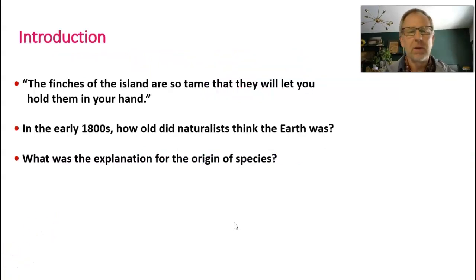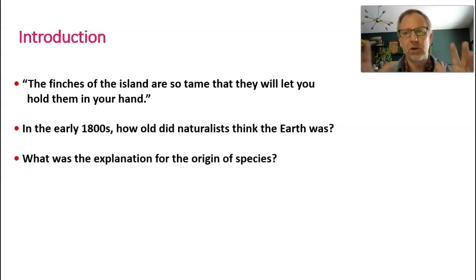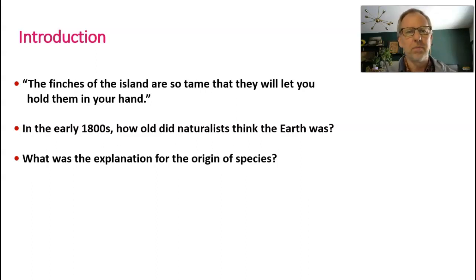You might already know something about Darwin. This chapter talks about Darwin and his voyage on the Beagle, the ship that sailed around South America where he was the ship's naturalist. By the time he got to the Galapagos Islands — the iconic place where people say he developed his theory of evolution — he had already been incredibly influenced by things he had observed as a naturalist in South America. He was kind of primed to be starting to think about evolution.